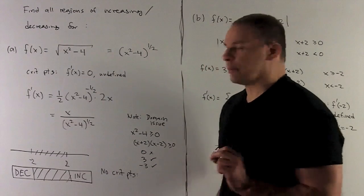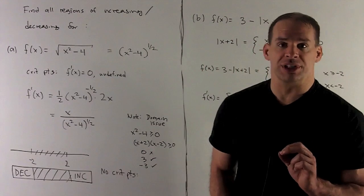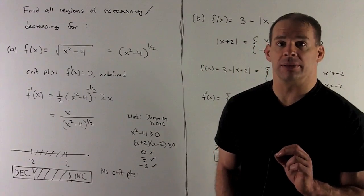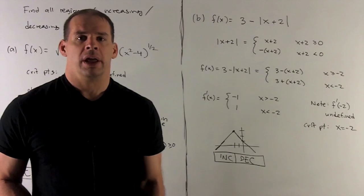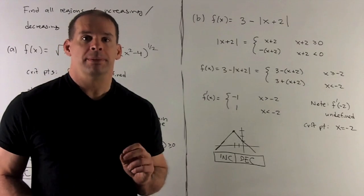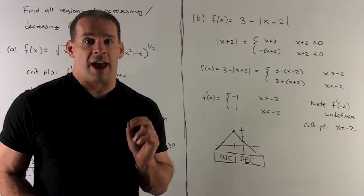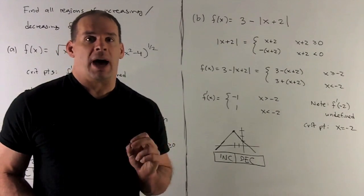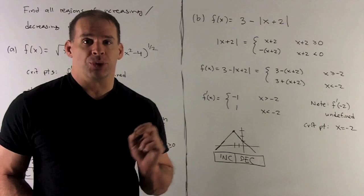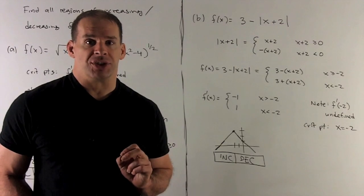That gives us the regions of increasing and decreasing for the first function. Next function: f(x) = 3 minus the absolute value of (x + 2).